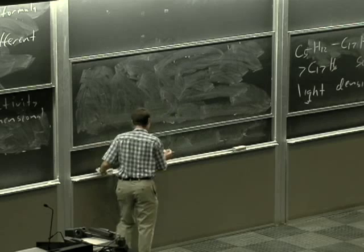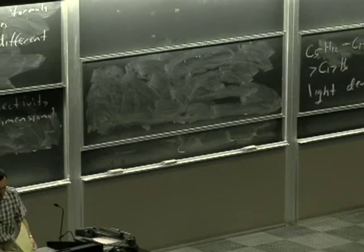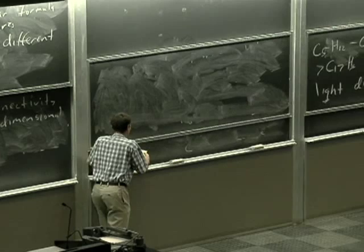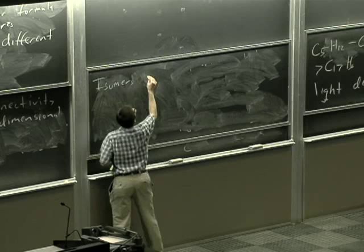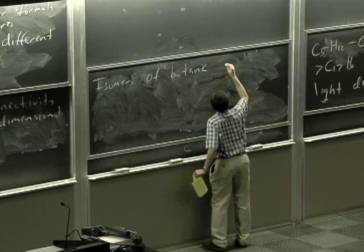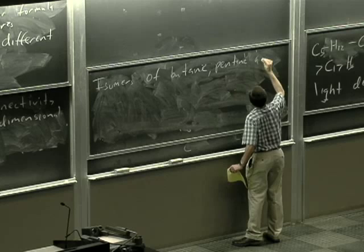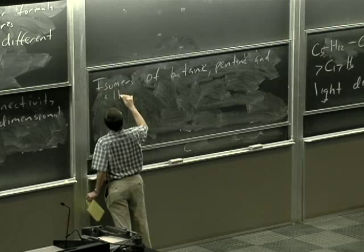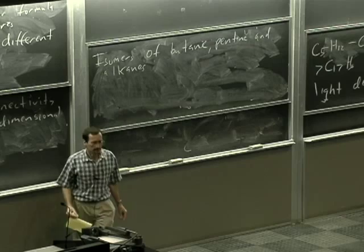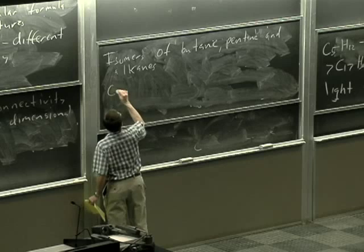So for isomers, let's start with the isomers of butane and pentane, and then we'll talk about some other. If we make a linear chain, CH3CH2CH2CH3, or I draw it as a zigzag structure, of course, you have a molecule that's called butane.